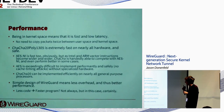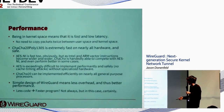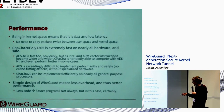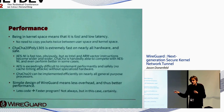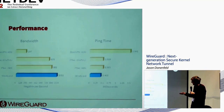ChaCha20-Poly1305 performs well on virtually all architectures — MIPS, old ARM — and on AVX-512 it's even faster than AES-NI. AES is very hard to implement in a way that's both fast and invulnerable to cache timing attacks on normal hardware, so ChaCha20 is quite nice. WireGuard is also fast because it's small — less code, faster program — it's simply doing less.